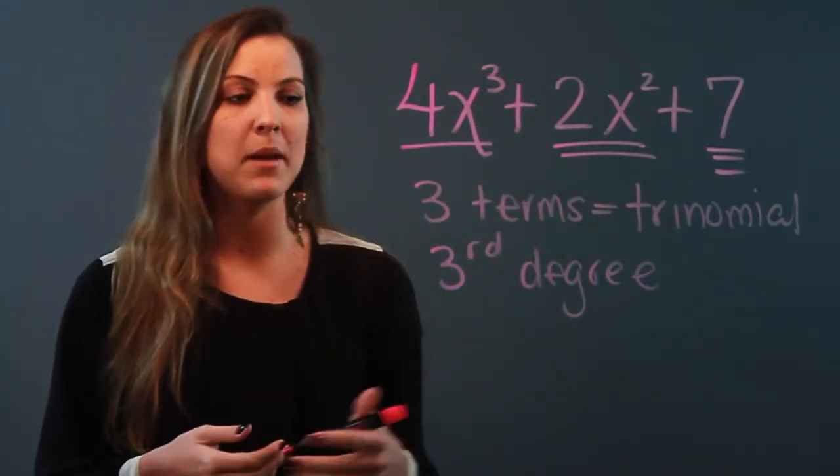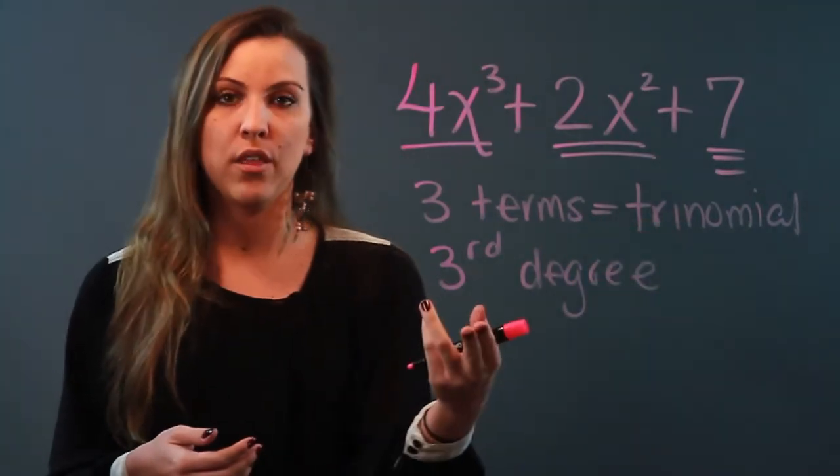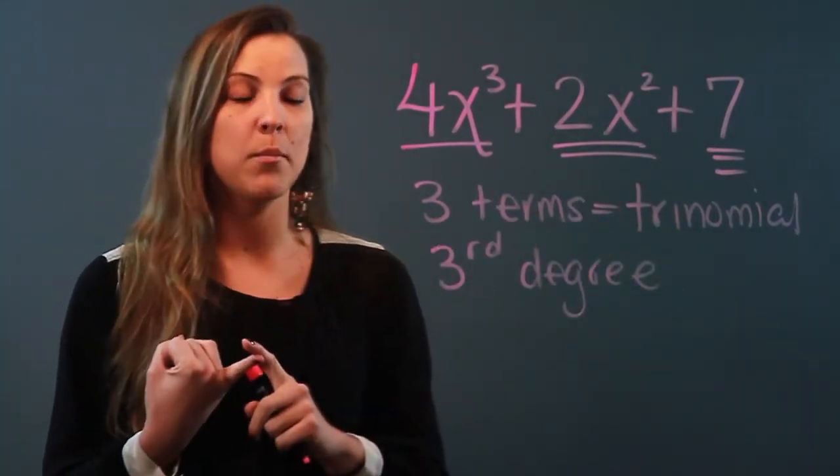So the polynomial that I wrote, 4x³ + 2x² + 7, would be described as a trinomial in the third degree.